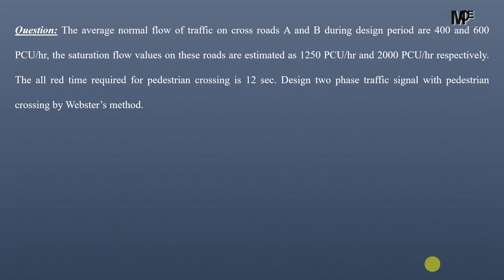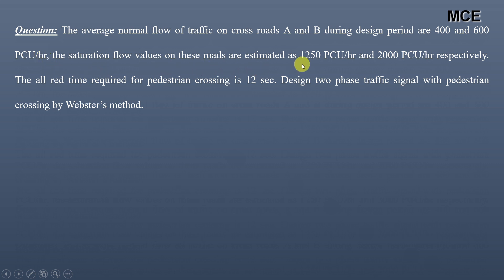Hello and welcome back to Master Civil Engineering. In this video you will learn how to design a traffic signal using Webster's traffic signal design method. The question states that the average normal flow of traffic on crossroads A and B during the design period are 400 and 600 PCU per hour. The saturation flow values are 1250 PCU per hour and 2000 PCU per hour for roads A and B respectively. The all-red time required for pedestrian crossing is 12 seconds. We have to design a two-phase traffic signal with pedestrian crossing by Webster's method.